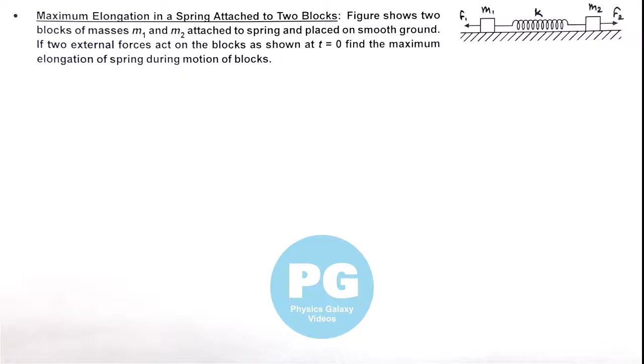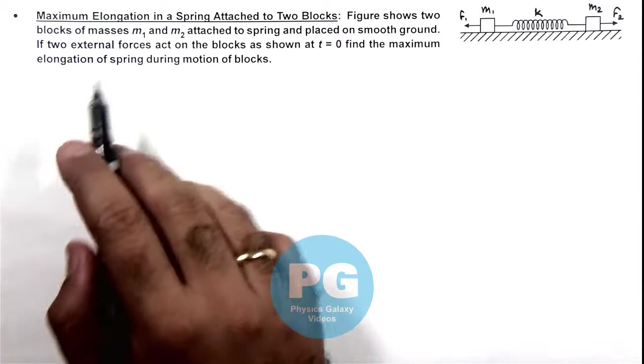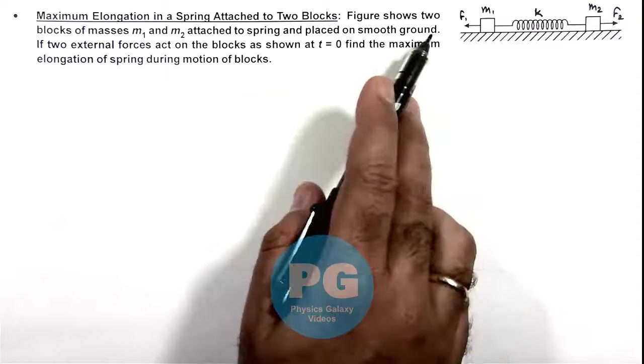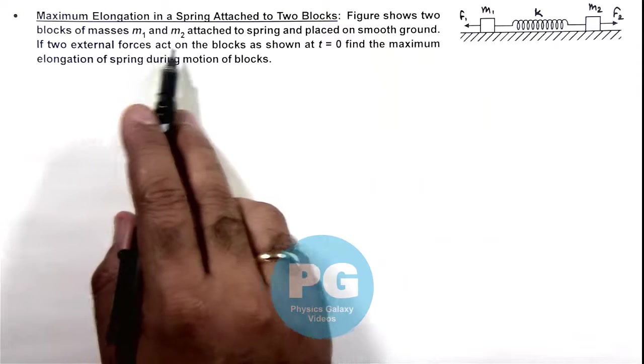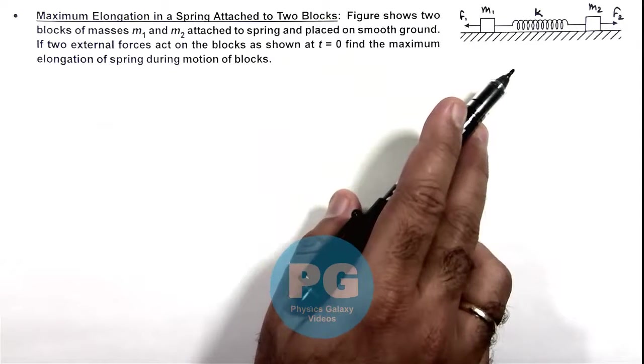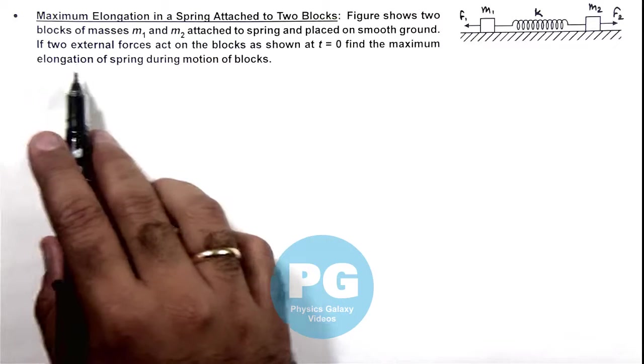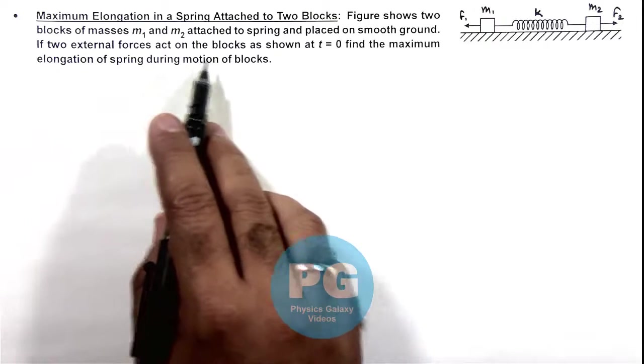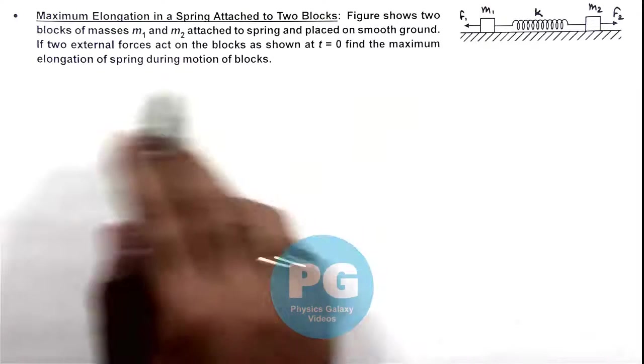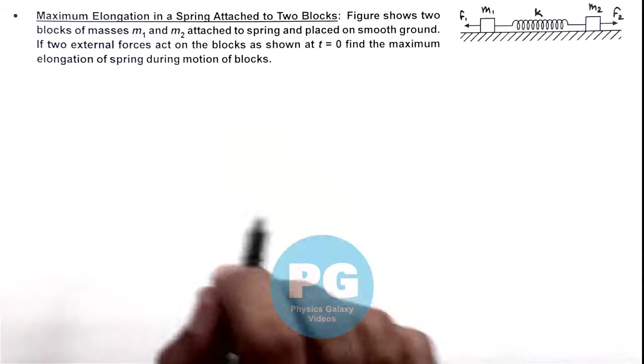In this illustration we'll discuss the maximum elongation in a spring attached to two blocks. The figure shows two blocks of masses m₁ and m₂ attached to spring and placed on a smooth ground. If two external forces act on the blocks as shown, and at t equal to zero, find the maximum elongation of spring during motion of these blocks.